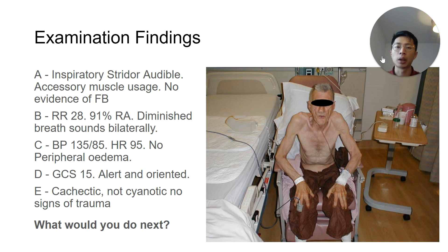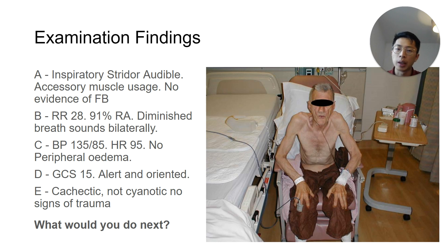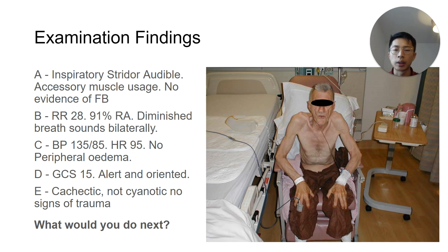Returning to John — this is an image taken from Google, not a real patient. On examination, he has inspiratory stridor and is using his accessory muscles. He's tripoding and has pursed-lip breathing. His respiratory rate is high, his saturations are low — and he doesn't have COPD — with diminished breath sounds, which are quite concerning signs. His heart rate and blood pressure are okay, he's able to speak, alert and orientated. He does look cachectic, which may point to his weight loss and possible malignancy. So what would you do next?